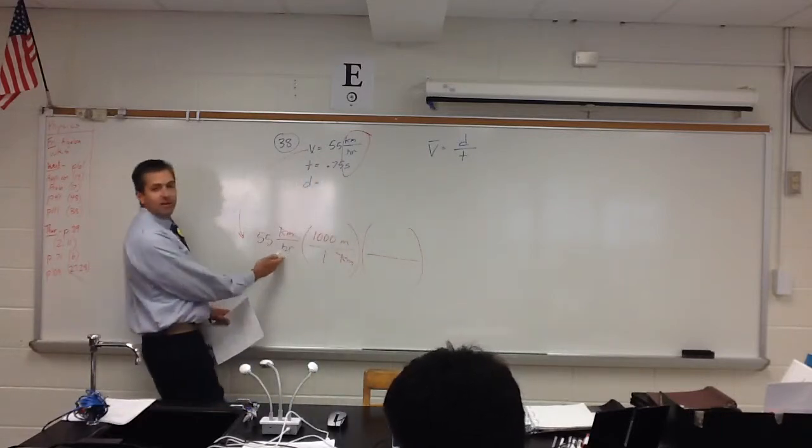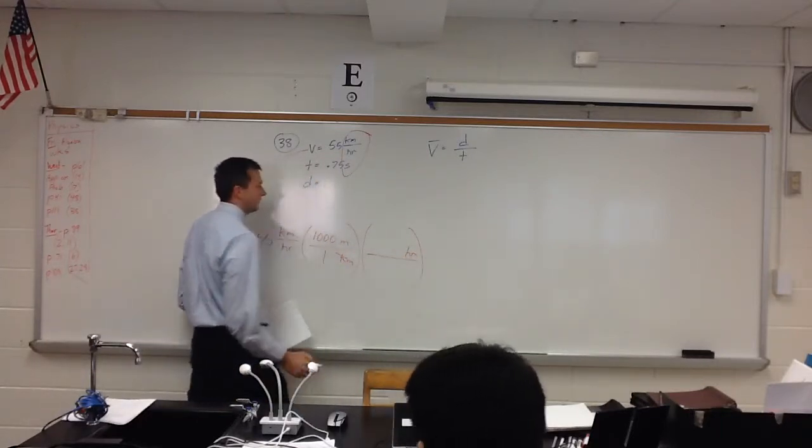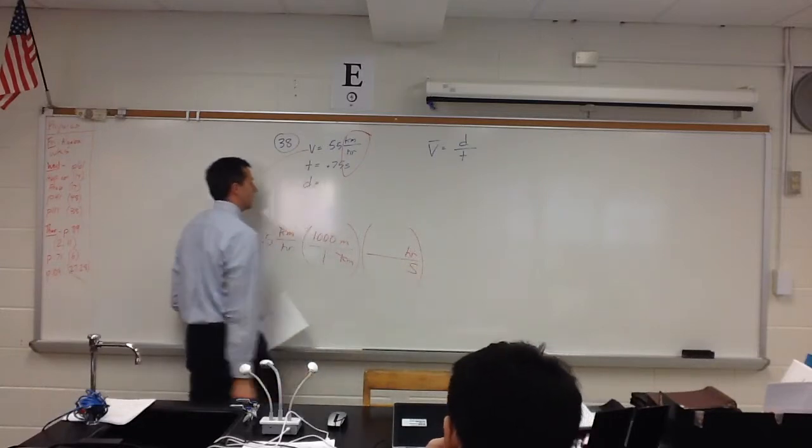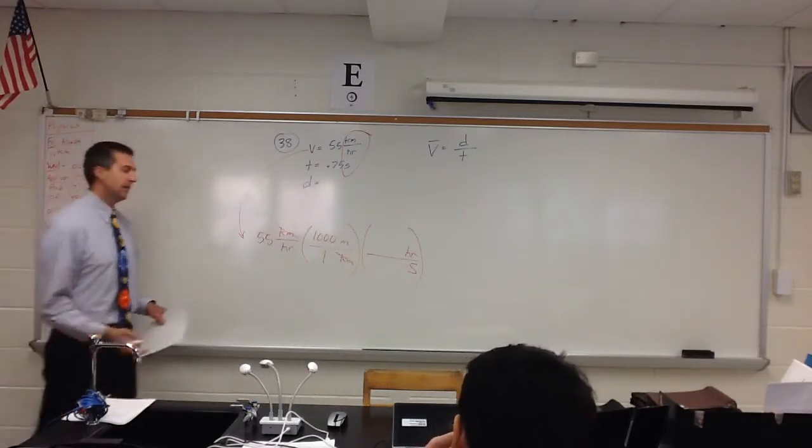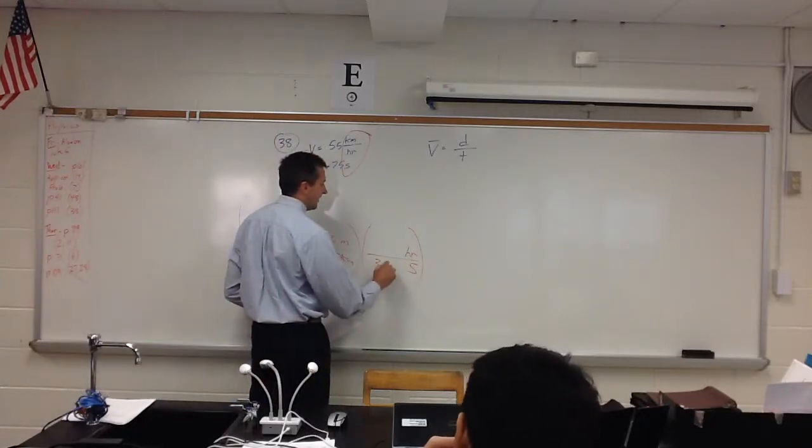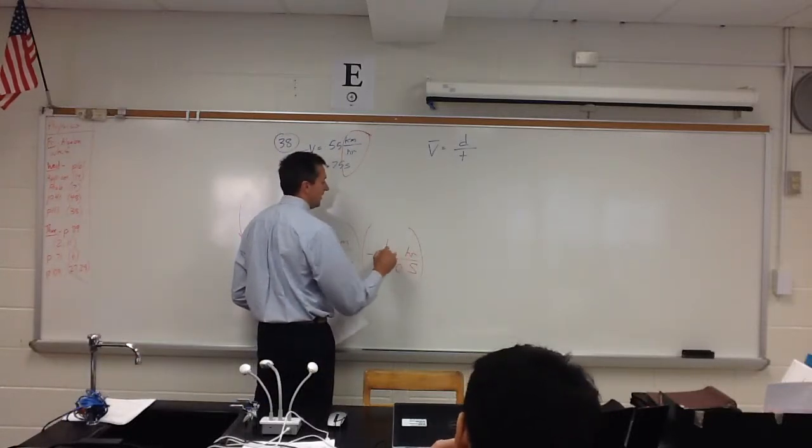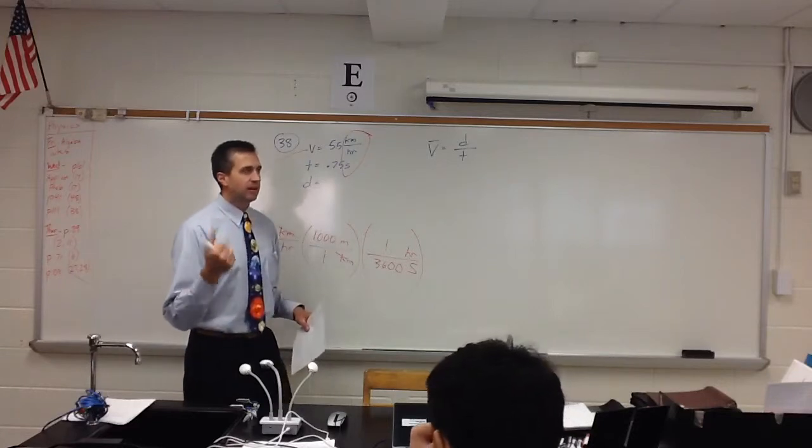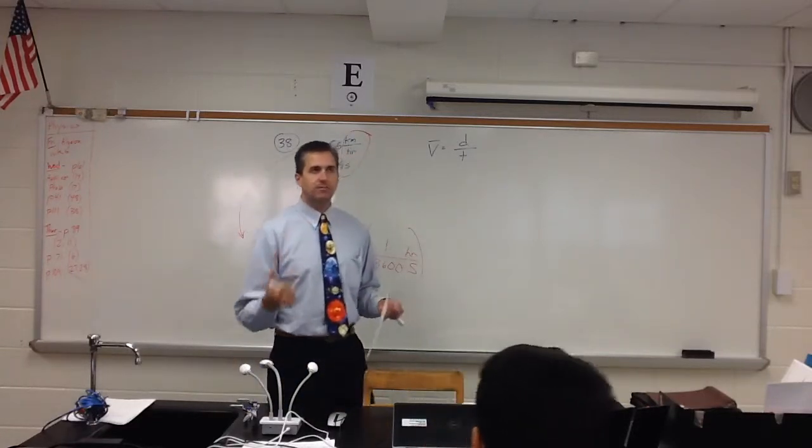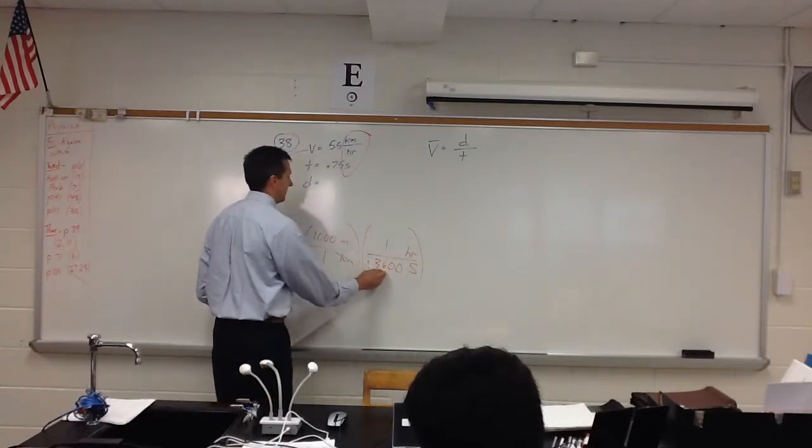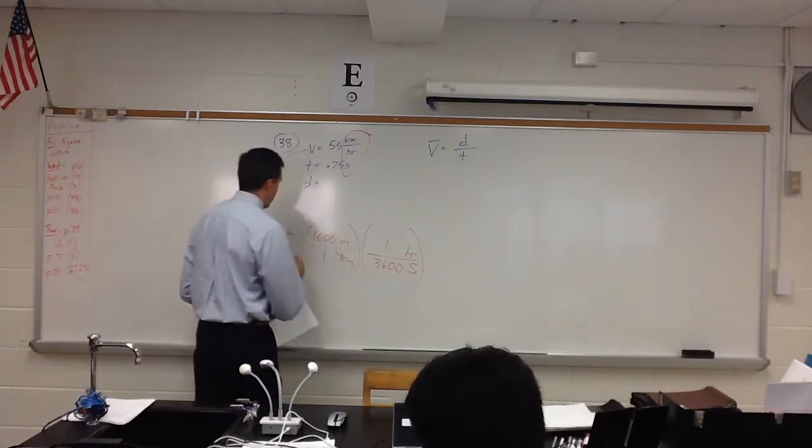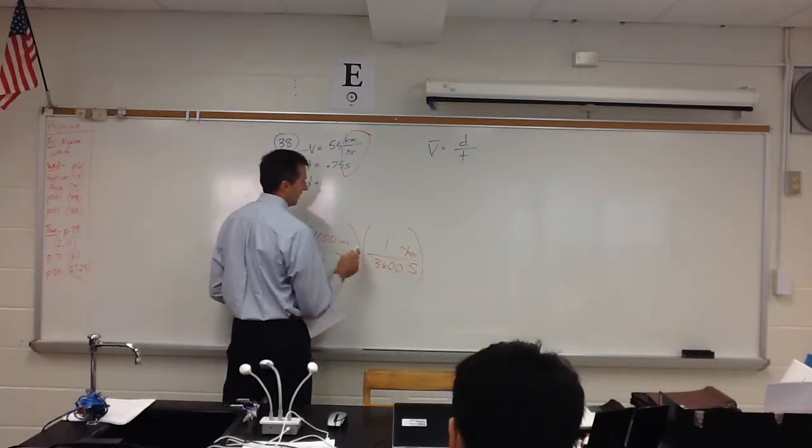So the hours are on the bottom. Therefore, they have to be canceled to the top. And I'm looking for seconds. So how many seconds are there in an hour? Yeah, there's 3,600 seconds. And the way you arrive at that is you say, okay, there's 60 seconds in a minute, 60 minutes in an hour. Times those together. You've got 3,600 seconds in an hour.